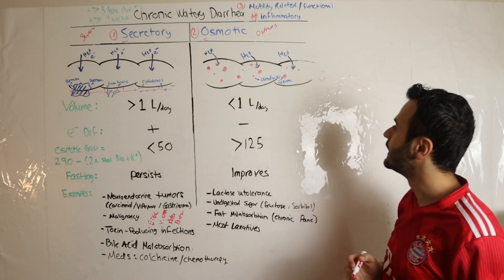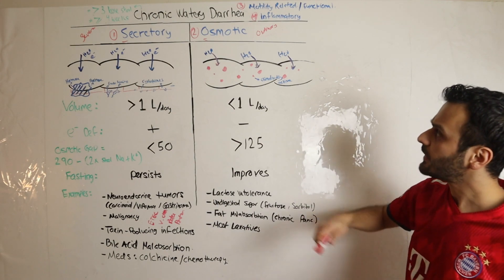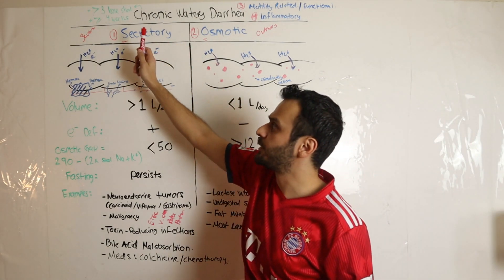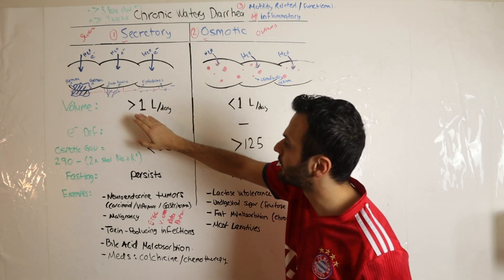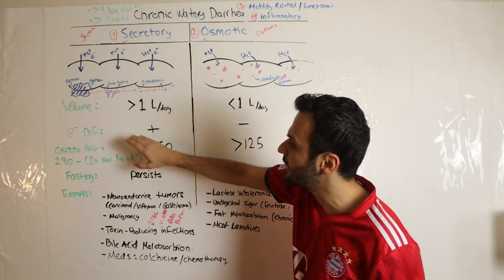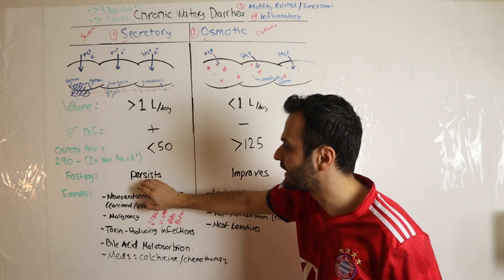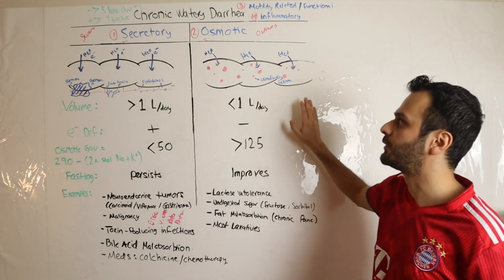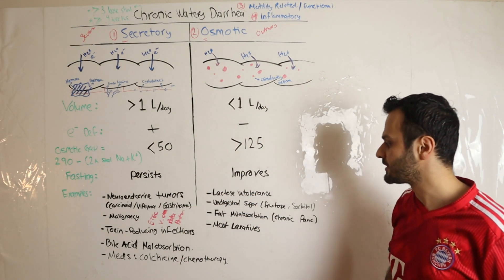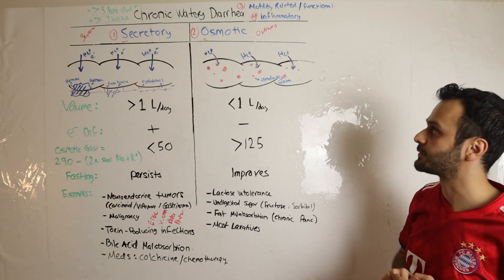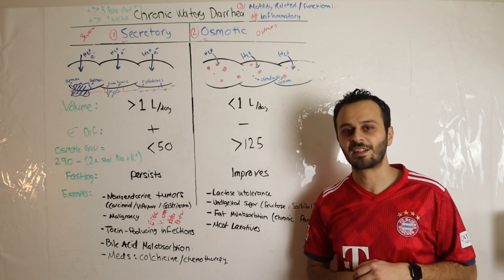To recap, remember secretory starts with an S, which is the severe form. It has large amounts of diarrhea with electrolyte deficiency and persists despite fasting. That is the opposite of what you see in osmotic diarrhea. Remember the examples because they ask about them in board examinations as well. That is it for today's video, I hope that was helpful. Thanks everyone for watching.